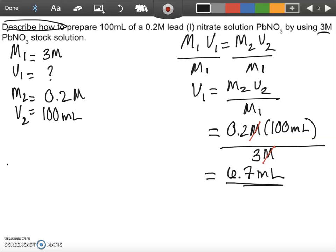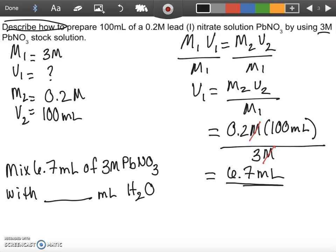Well, I'm going to describe it down here as mix 6.7 milliliters of 3 molar PbNO3 with a blank amount or milliliters of water. Uh-oh, how much water should I add to this in order to dilute it?